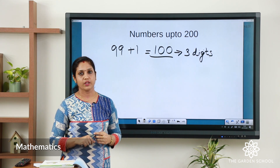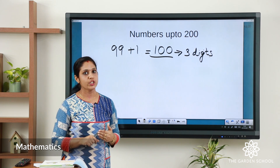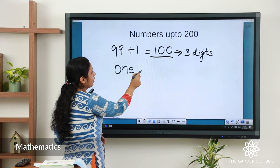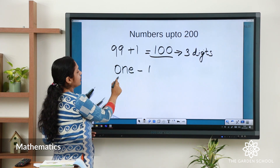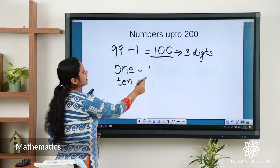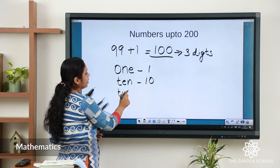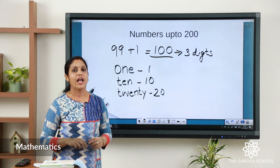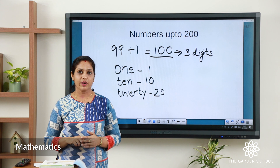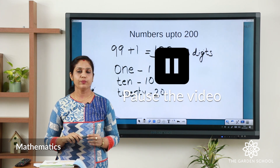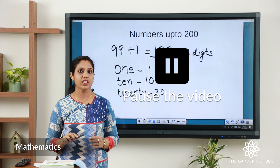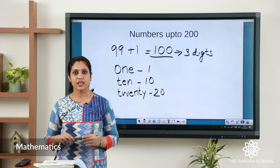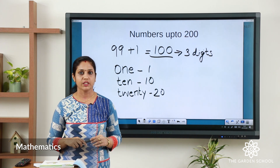Open your textbook to page number 1. We have already learned the number names from 1 to 100 — let's revise. You know 'one' is 1, 'ten' is 10, 'twenty' is 20. Now I am going to give you another activity: write the number names from 1 to 20. Pause the video and write them. In the textbook there is also an exercise — you can do that as homework.